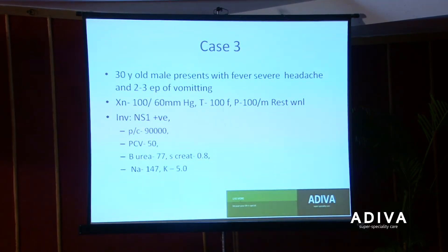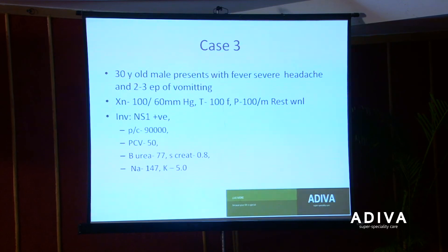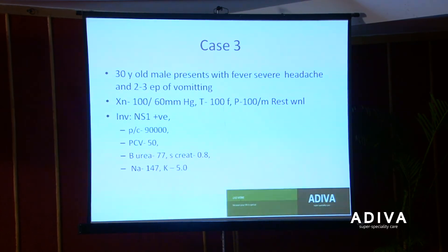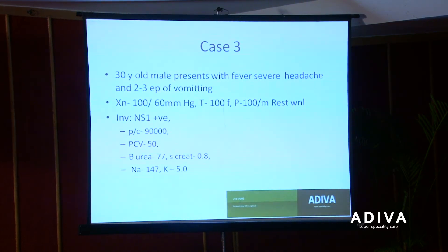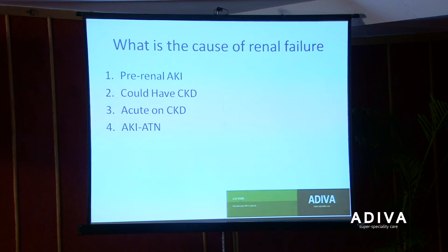A young male presents with headache and vomiting. He's hypertensive with a normal pulse. His NS1 is positive, platelets are 90,000, urea is elevated, and creatinine is normal. What do you think the cause of renal failure is?